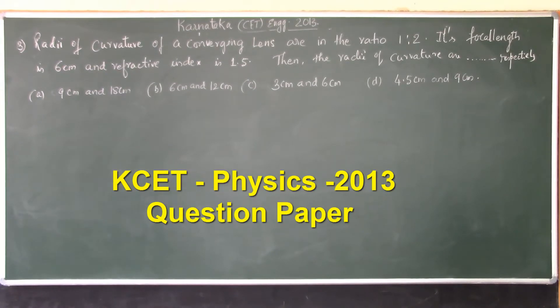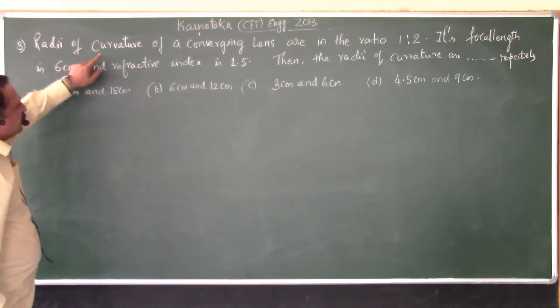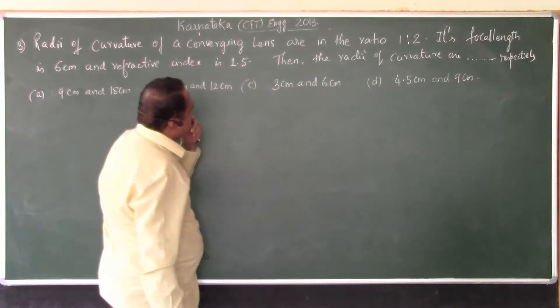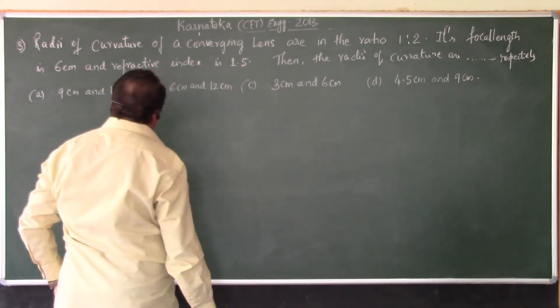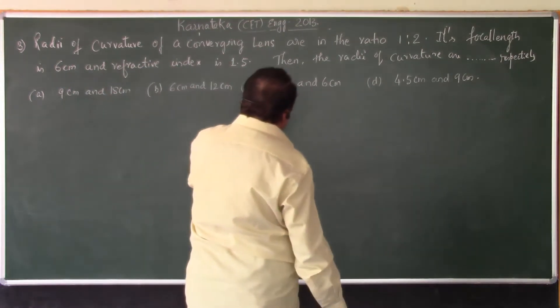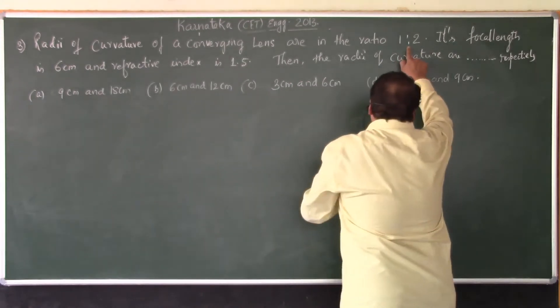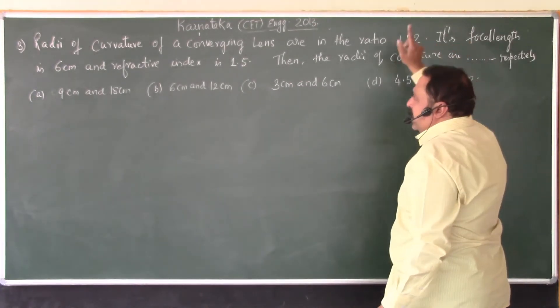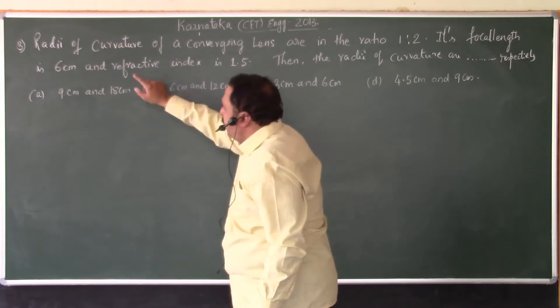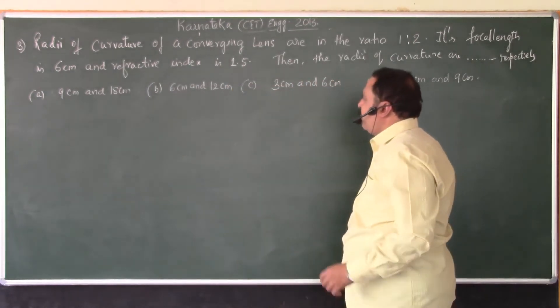Now, this is the next problem from Karnataka CET Engineering Exam 2013. Radii of curvature of a converging lens are in the ratio 1 is to 2. Its focal length is 6 centimeters and refractive index is 1.5.